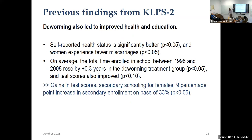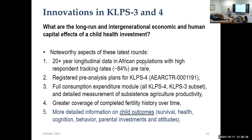We also documented longer-term health and education gains: self-reported health is better, women report experiencing fewer miscarriages, there's an increase in total school enrollment, and gains in test scores. Human capital gains in test scores and secondary school enrollment are actually larger among females than males. But as I'll show, the 20-year labor market gains are somewhat larger among males — that may have to do with differences in labor market opportunities and discrimination by gender. There are gains in different dimensions for different gender groups, with very large gains in education for females — a big increase in secondary school enrollment in the treatment group.